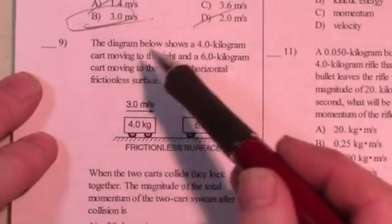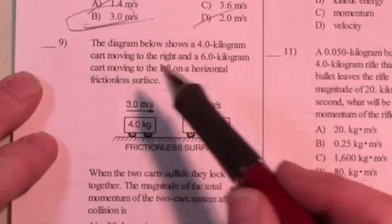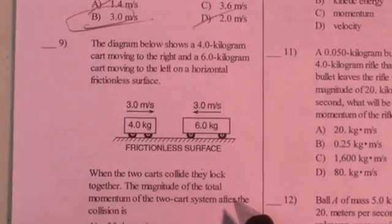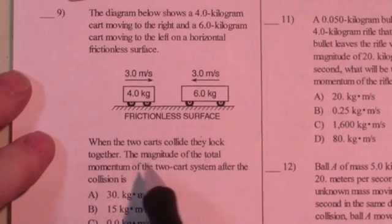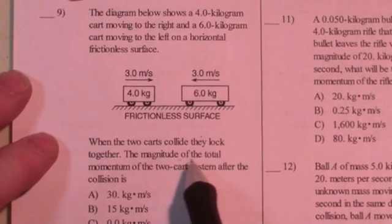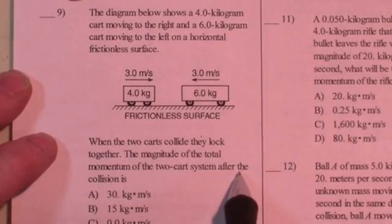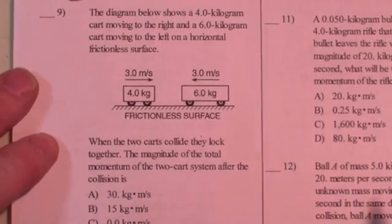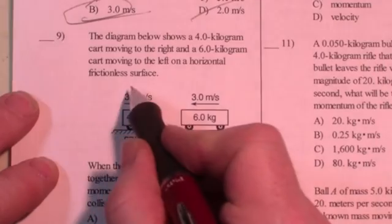Question 9. The diagram shows a 4 kilogram cart moving to the right and a 6 kilogram cart moving to the left on a horizontal frictionless surface. When the two carts collide, they lock together. The magnitude of the total momentum of the two carts after the system is, well, it's going to be whatever the momentum was before the collision. So let's do that.